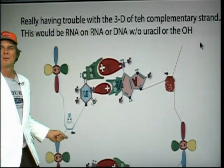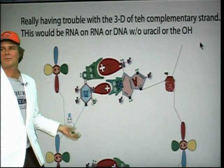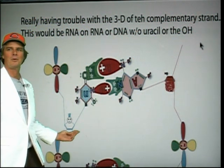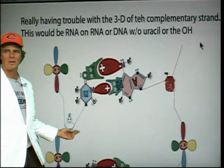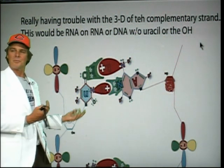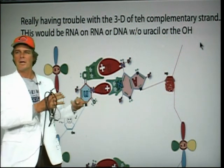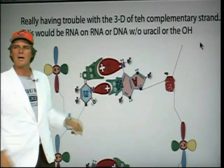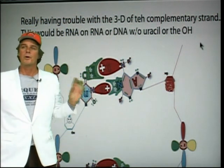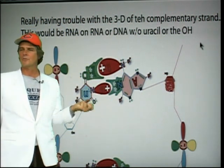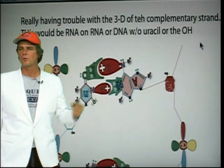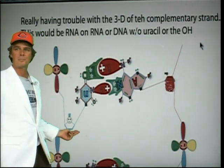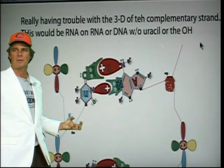If an OH is on there, it's ribonucleic acid. Take away the OH, it's deoxyribonucleic acid. When you're double-stranded and one strand is going up and one is going down, when they're able to squeeze inside or wrap around a histone in your chromosomes, this OH will have an influence on the packing of it.